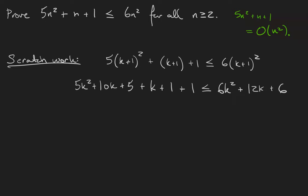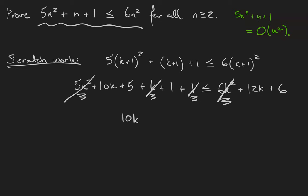In our inductive hypothesis, we will have assumed that 5k squared plus k plus 1 is at most 6k squared — that's just the desired statement with k's instead of n's. Since we already know that inequality is met, let's set those terms aside. That leaves us with the statement that 10k plus 6 is at most 12k plus 6, and since k is greater than or equal to 2, this statement is true.